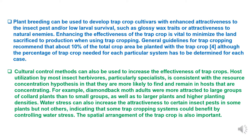Plant breeding can be used to develop trap crop cultivars with enhanced attractiveness to insect pests or low larval survival, such as glossy wax traits or attractiveness to natural enemies. Enhancing the effectiveness of a trap crop is vital to minimize the land sacrificed to production. General guidelines recommend that about 10% of the total crop area be planted with the trap crop, although the percentage needed must be determined for each particular system.